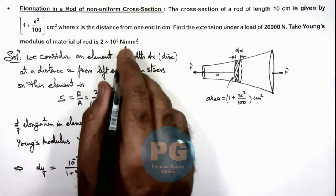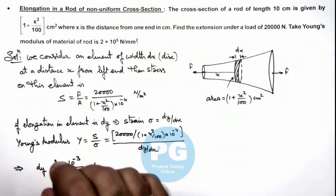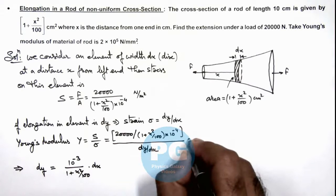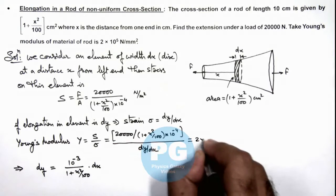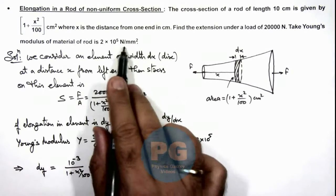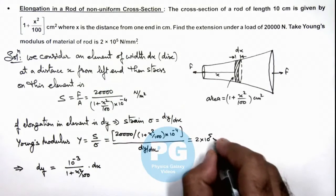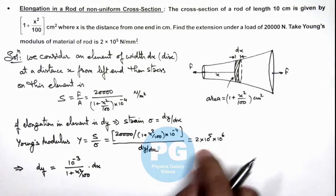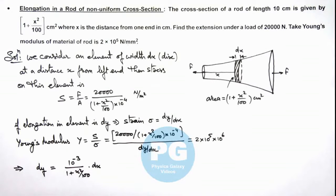Here Young's modulus is already given to us. We can substitute the value of Young's modulus to be equal to 2 into 10 to power 5. This is in Newton per millimeter squared, so we multiply it with 10 to power 6, so this will also be in Newton per meter squared. Simplifying this we get the value of dy as this.